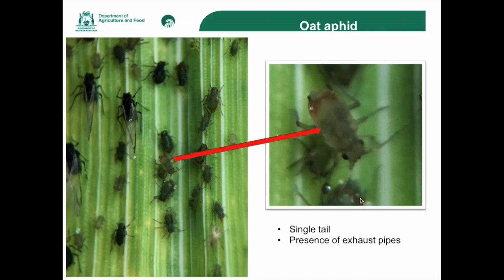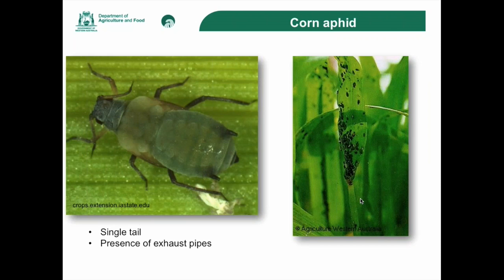This is the oat aphid. You can see there are some winged aphids in there, which are much harder to identify, so generally we just go straight for the wingless version. The oat aphid has a very distinctive rusty patch at the top of the backside and those cornicles — the sort of exhaust pipes — which are a good giveaway. And of course the other common cereal aphid, the corn aphid, is quite different, but you can also see those exhaust pipes on the top of the backside.